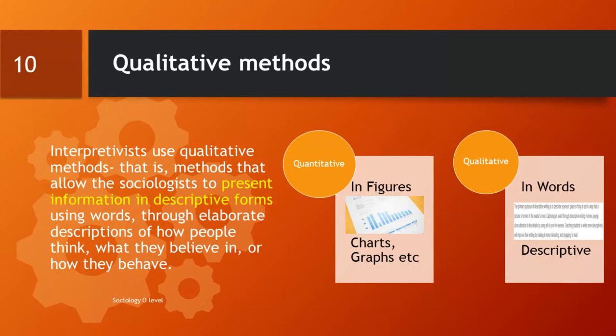We are now going to look at the methods that interpretive sociologists use to gather data. They use qualitative methods — methods that allow them to present information in descriptive forms using words. They represent their findings in words, through descriptions of human behaviour, contrary to the figures, charts, and percentages used by the positivists.